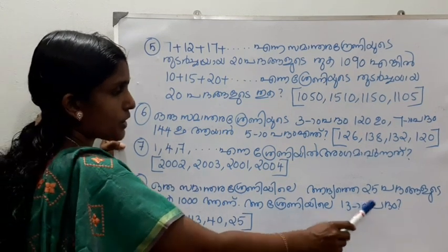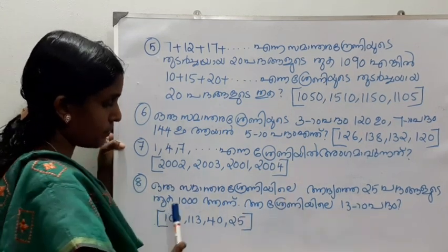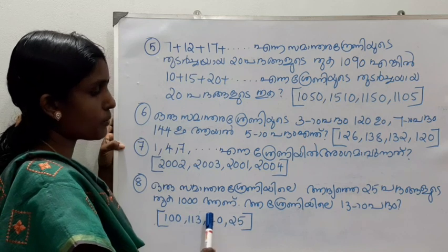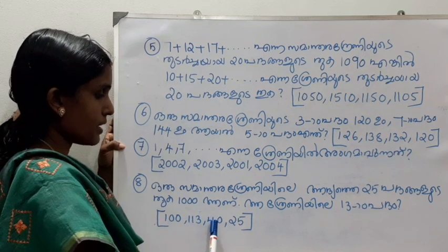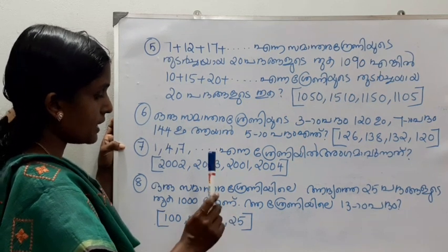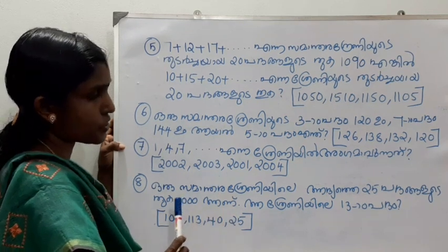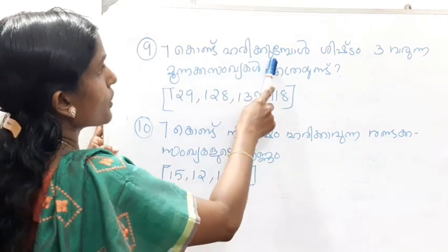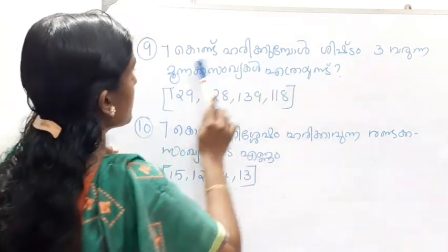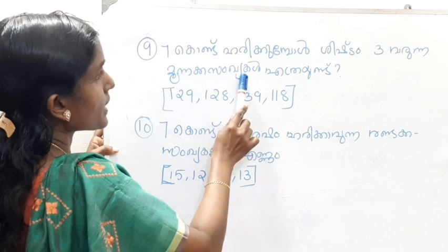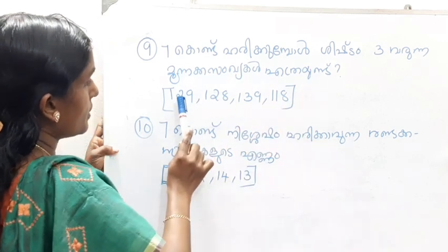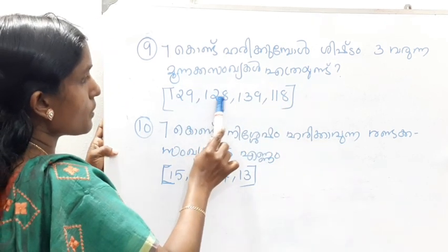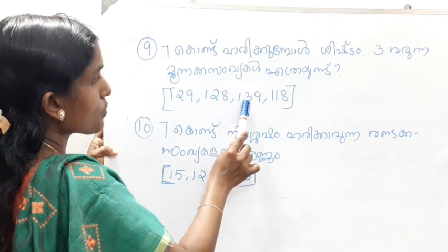That shreani is the same as 13 times. Options: 100, 13, 40, 25. The samadhar shreani is the same as 3 times — 3 times are the same as 3 times. Options: 120, 128, 130.